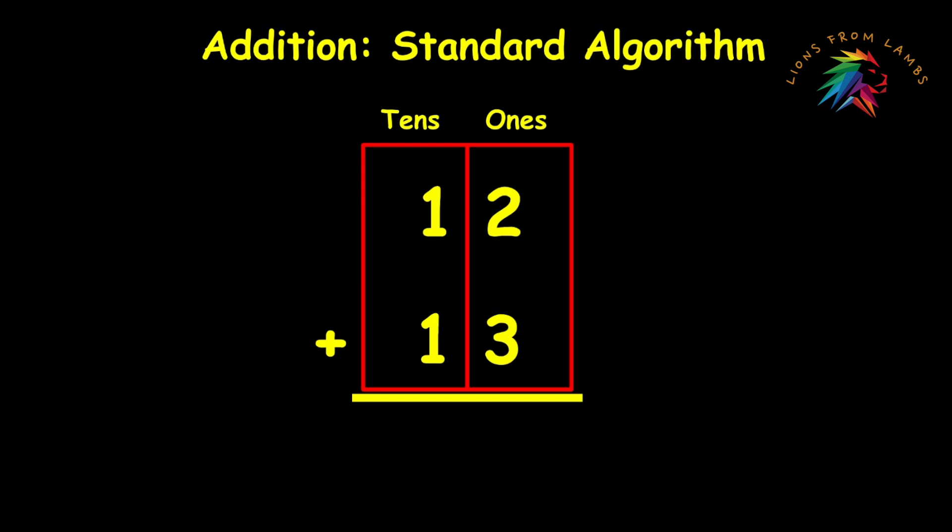And now it's a simple matter to solve this problem. Always start with the one's place and if we look at the ones we've got two and three in the one's place. Two plus three equals five. Then we move to the ten's place. One plus one equals two. So 12 plus 13 equals 25.